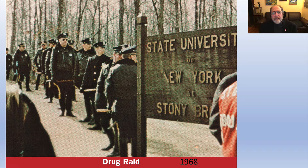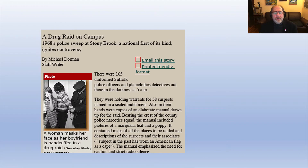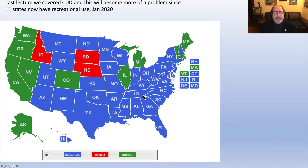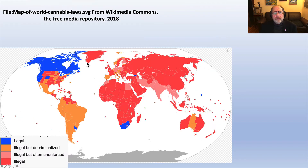Speaking about legal things, in 1968 the State University of New York at Stony Brook was invaded by Suffolk County Police. Dr. Shirley Kinney gave me these slides — they arrested around 38 people, and 165 police invaded the campus. More recently, many states have become involved in using medicinal marijuana, and some states have fully legalized recreational marijuana, while a few states have still prohibited it.